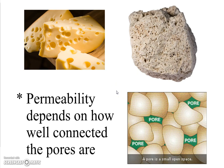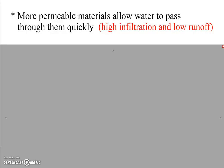So the main factor that affects permeability is how well-connected those pores are. If a material is highly permeable, it means that water is able to get through it quickly. Highly permeable materials have a high infiltration rate and a low rate of runoff, because if water is getting in, then it's not staying on top.